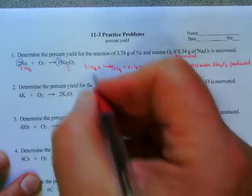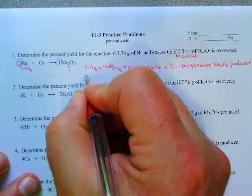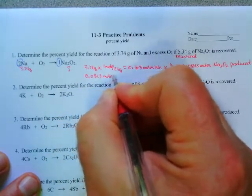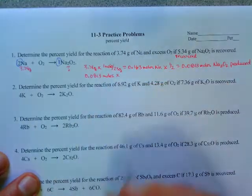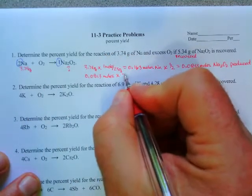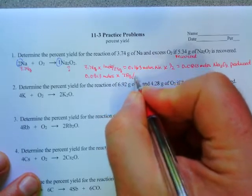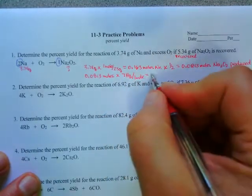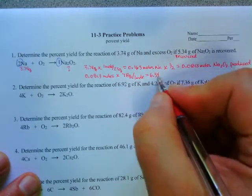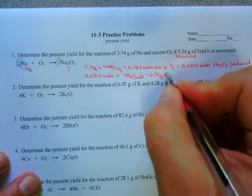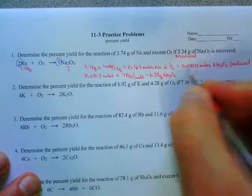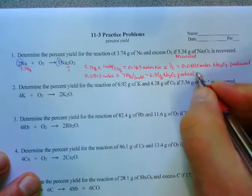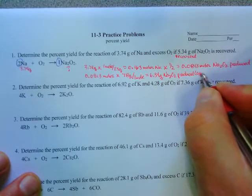Now we need to go back into grams. So we'll use our 0.0813 moles times 78 grams for Na2O2 - 78 grams per one mole - which gives us 6.34 grams of Na2O2 produced. And actually that's the expected production.